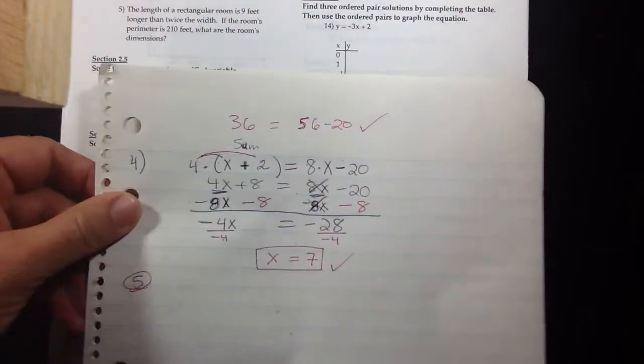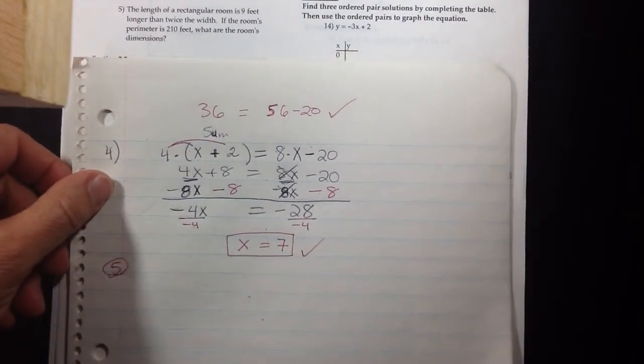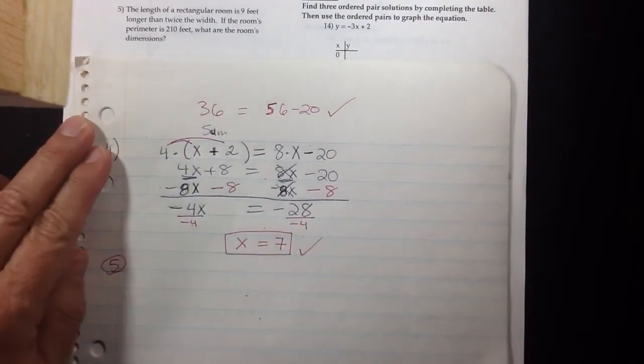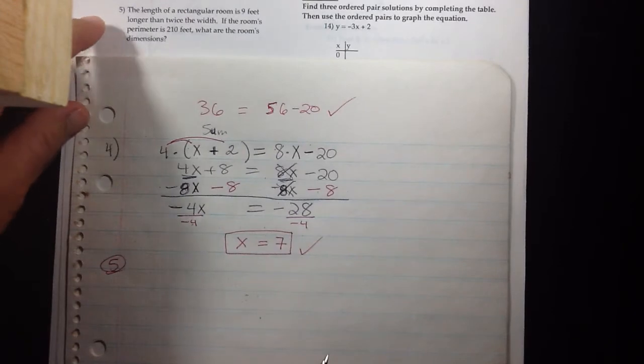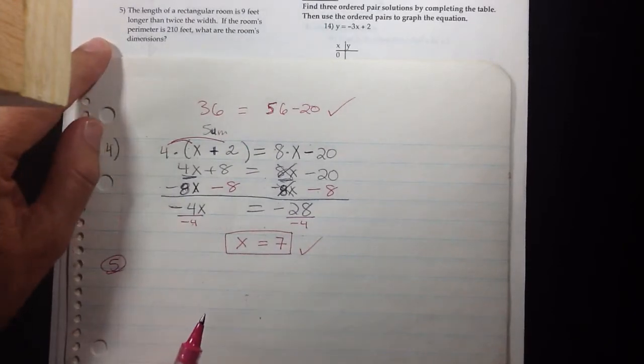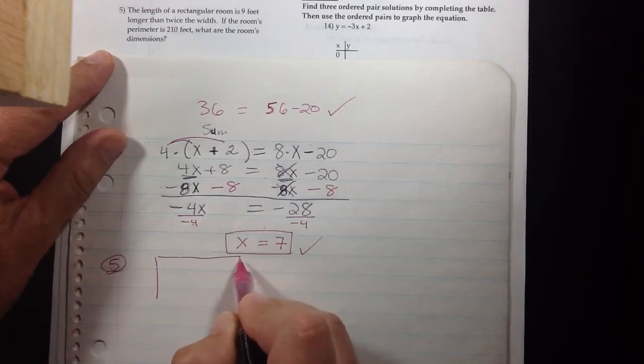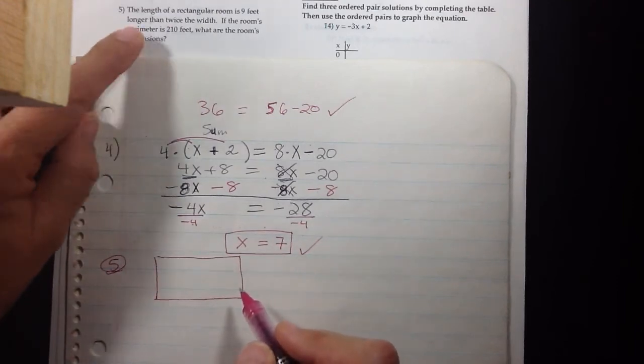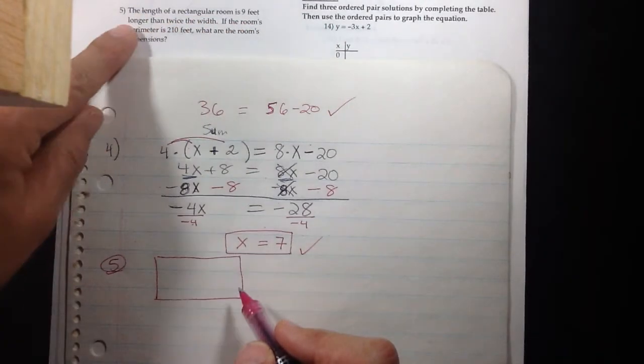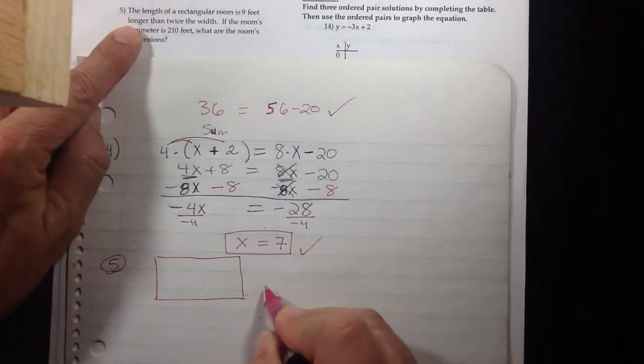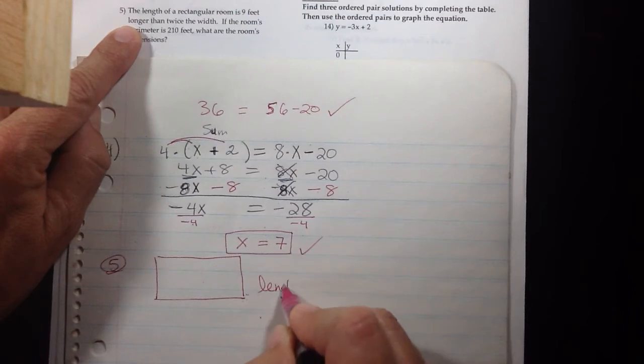On number five says the length of a rectangular room is nine feet longer than twice the width. If the room's perimeter is 210, what are the room's dimensions? So I'm a visual learner, I like having a picture in front of me.